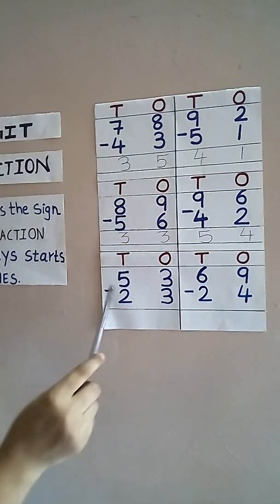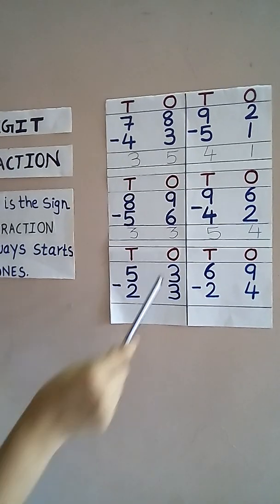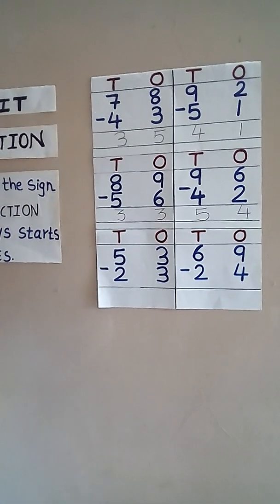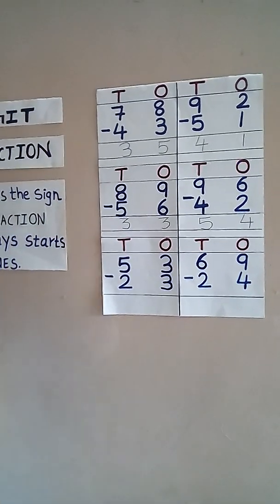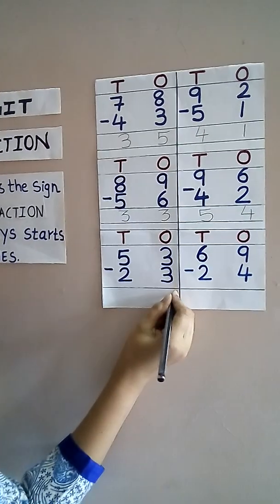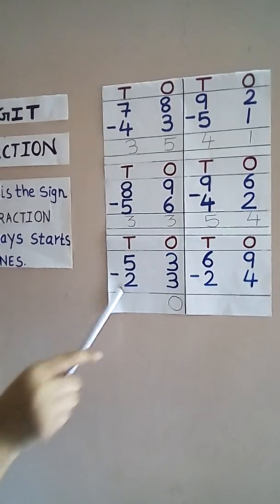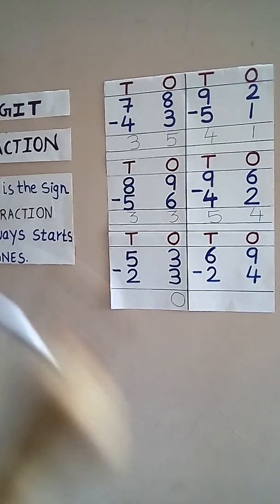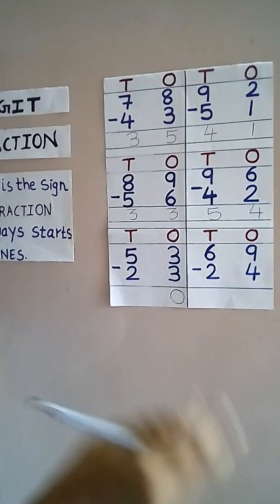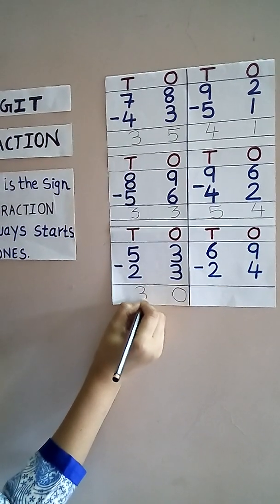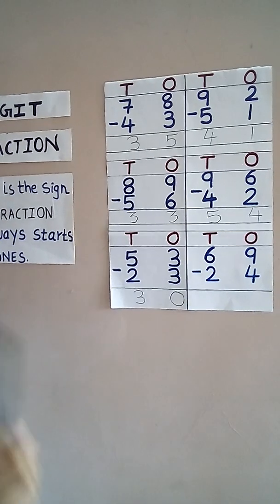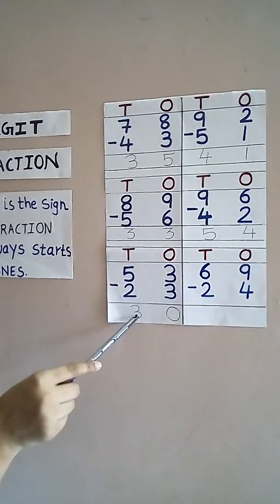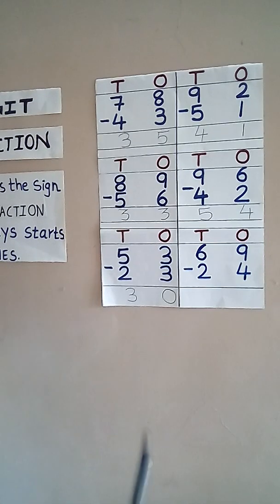Now: 53 minus 23. We start from ones. 3 minus 3 — from 3 if we give 3, then what remains? 0. Now 5 minus 2: start from the next number that is 3 and count up till 5: 3, 4, and 5 — how much did you get? 3. Write down 3. So when we subtract 53 from 23 we got 30 — that is 3 tens and 0 ones.